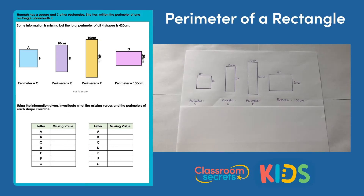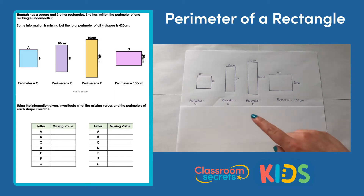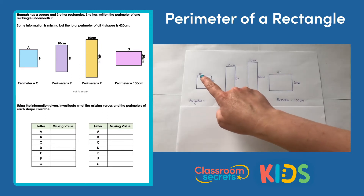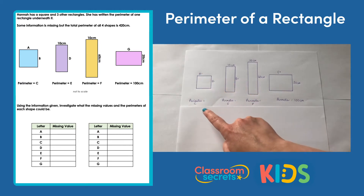Hannah has a square and three other rectangles. She has written the perimeter of one rectangle underneath it. Some information is missing, but the total perimeter of all four shapes is 420cm. We can see the four shapes there. I've written them again here just so I can show you which part I'm working on as we go along. So I have my square here, and we have our missing values A and B. The perimeter of that shape is C.